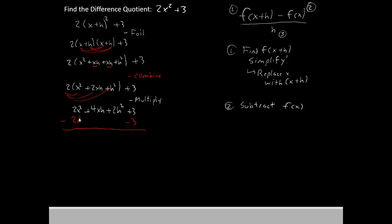So the 2x squared and the minus 2x squared cancel, the 3 and the negative 3 cancel, leaves us with only two terms: 4xh plus 2h squared.